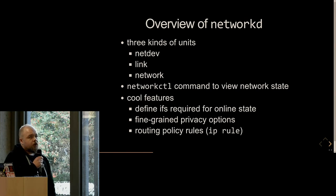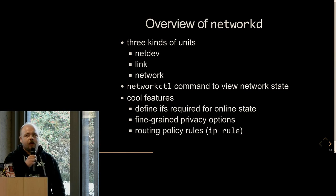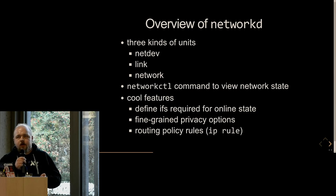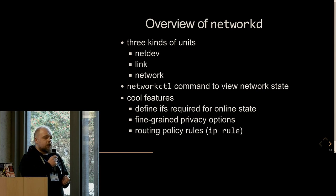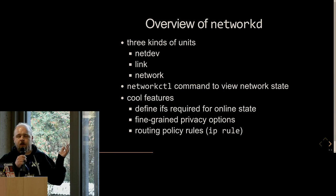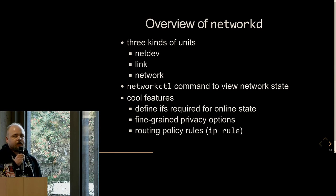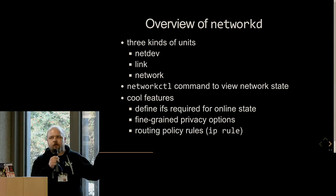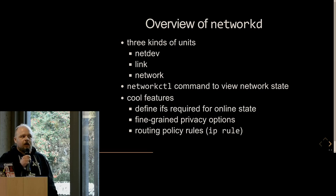NetworkD also has unit files. There are three kinds: netdev, link, and network. Netdev is to create network interfaces — for example, bridges, bonding interfaces, TUN interfaces. Link is to configure network interfaces, for example to set the MTU or MAC address. Network is to do the IP configuration: IPv4, IPv6, enable DHCP and the like. There's also a nice networkctl command where you can get the state of NetworkD and your current network settings. Be aware you can't modify settings directly — everything has to be done in the unit files. NetworkD can be easily reloaded without a restart, and that's also the reason why it can break in some cases, but mostly it won't.